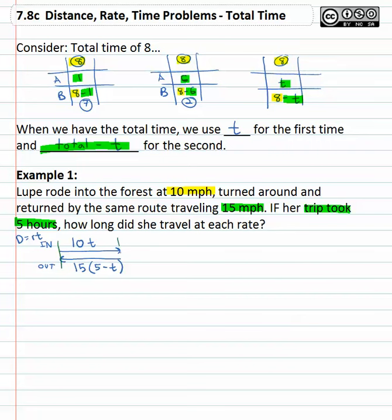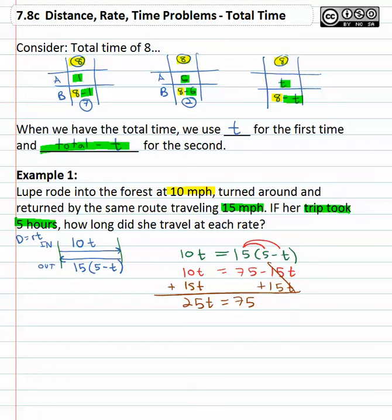Looking at this picture, we can see going in and coming out, they cover the same distance. If they're the same distance, we can make those distances equal to each other. So 10t equals 15 times (5 minus t). We can now solve this by distributing. 10t equals 15 times 5 is 75 minus 15t. Get the variable on one side by adding 15t to both sides. We now have 25t equals 75. Divide both sides by 25, and we find that time equals 3.